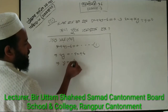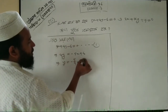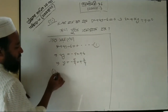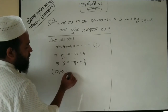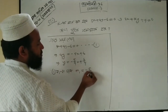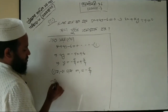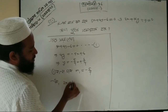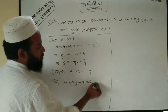So y equals minus 5 by 4 times x plus 6 by 4. Therefore the slope m₁ equals minus 5 by 4. Now the second equation is 2x plus ky plus 9 equal to 0.